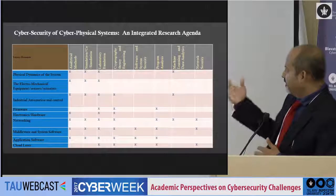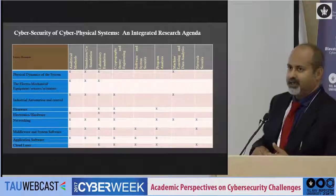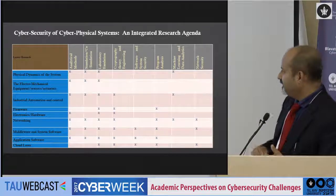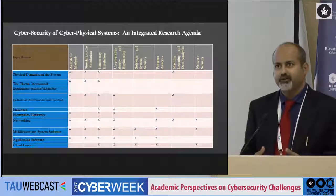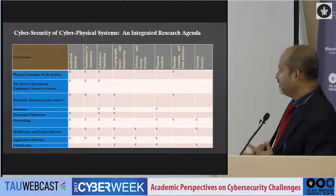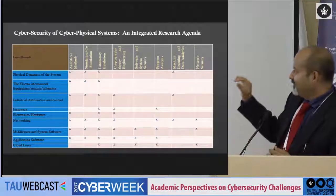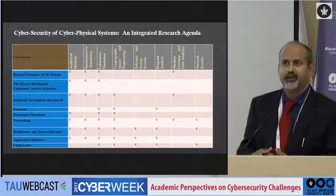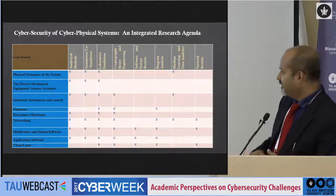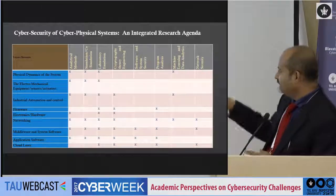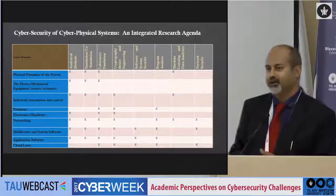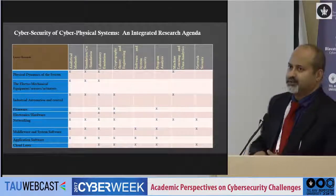There are electromechanical components like relays and breakers. Then we have the industrial automation and control layer, which is basically the SCADA system, with various communication and embedded computation components. We also have to look at firmware — for example, secure boot — and then all the other things like software, network, and perimeter defense, as well as application software. Nowadays a lot of this functionality is going into the cloud layer. We looked at the various methods we will explore, and various disciplinary knowledge and expertise will be used — for example, we have electrical engineering and power system engineering people looking into PMU-based power system monitoring and wide-area monitoring and control.